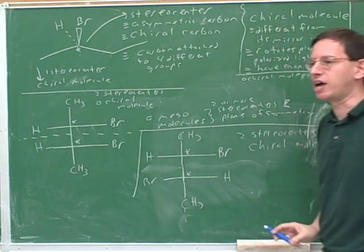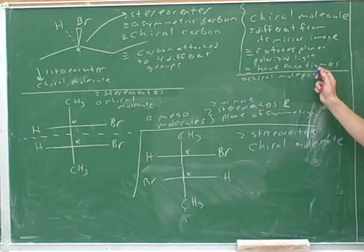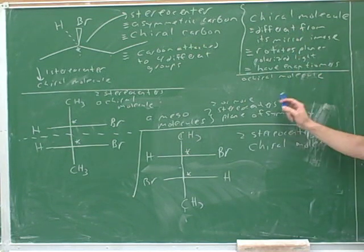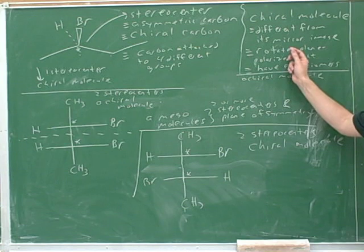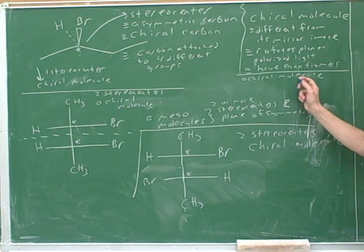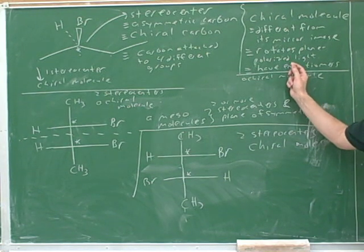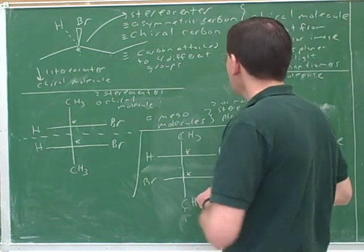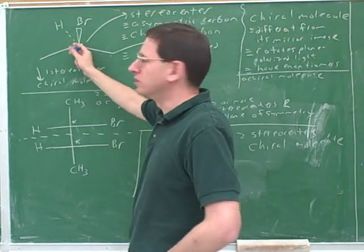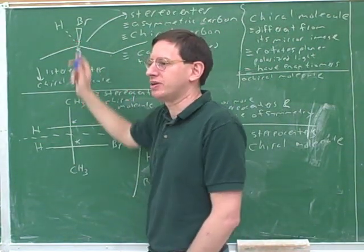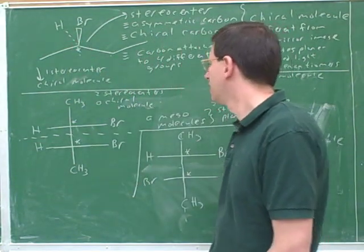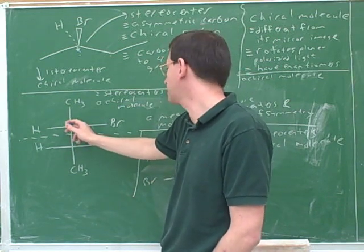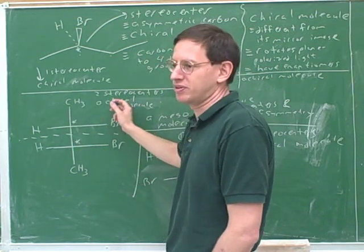An achiral molecule is the opposite of all these things: an achiral molecule is the same as its mirror image, does not rotate plane polarized light, and does not have an enantiomer. Does this molecule have an enantiomer? Yes. Does this other molecule have an enantiomer? No — even though it has stereocenters, it has no enantiomer because it's meso, so it's achiral.